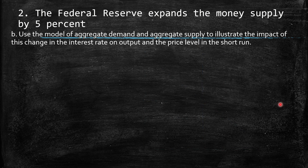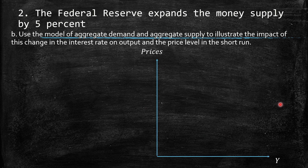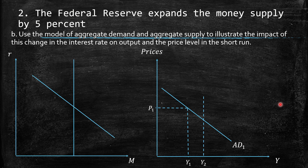b. Use the model of aggregate demand and aggregate supply to illustrate the impact of this change in the interest rate on output and the price level in the short run. When talking about AD-AS, we put prices on the y-axis and real GDP on the x-axis. Assume we start from equilibrium with the money market showing R1 and M1, and money demand MD1.